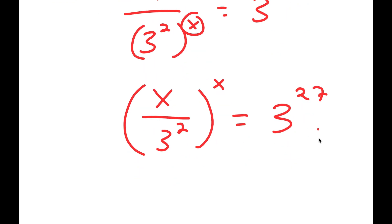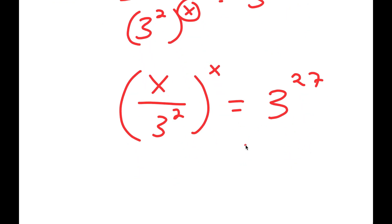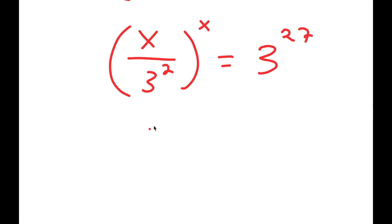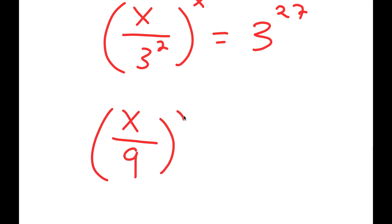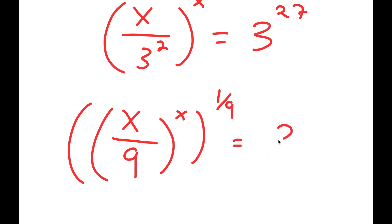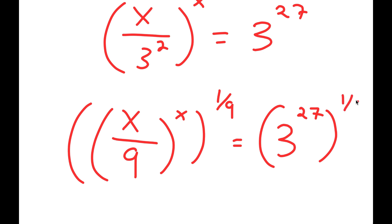And this is still equal to 3 to the power of 27. Now I'm going to take the power of 1 over 9 on both sides. So I get x over 9 to the power of x to the power of 1 over 9, which is equal to 3 to the power of 27 to the power of 1 over 9.